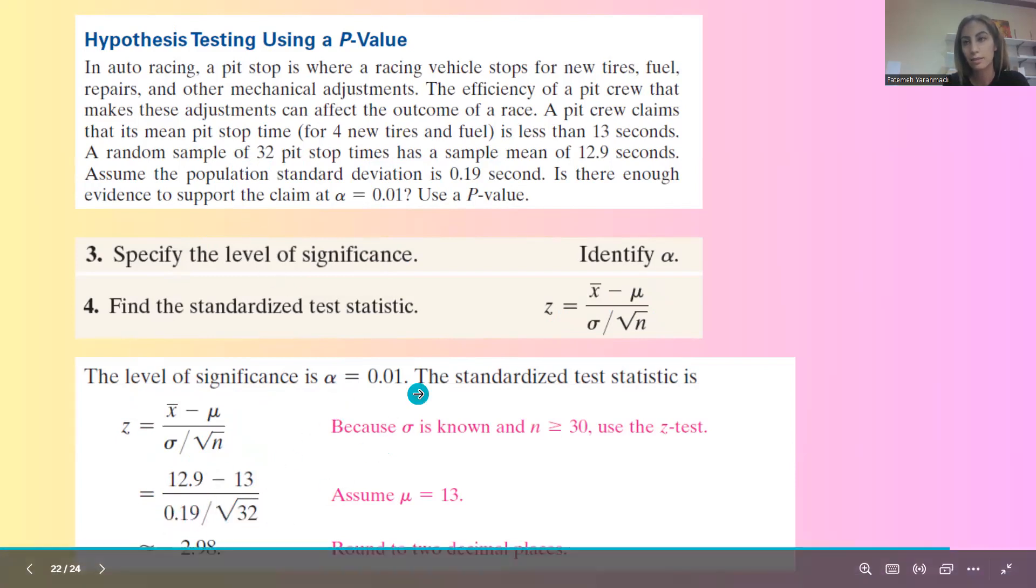x̄ or the average of your sample is 12.9 minus μ, which is population mean, divided by sigma, which is also given to us as 0.19 seconds divided by square root of n. n is the sample size. Remember that you had 32 pit stop times. If you do the calculation, the standardized test statistic is about negative 2.98.